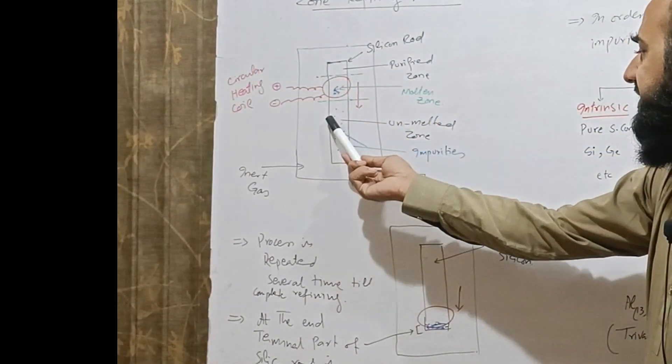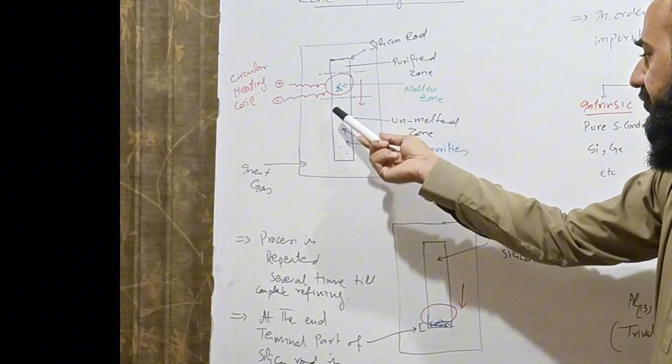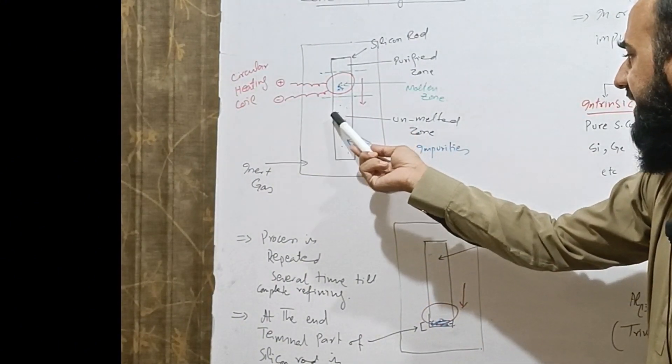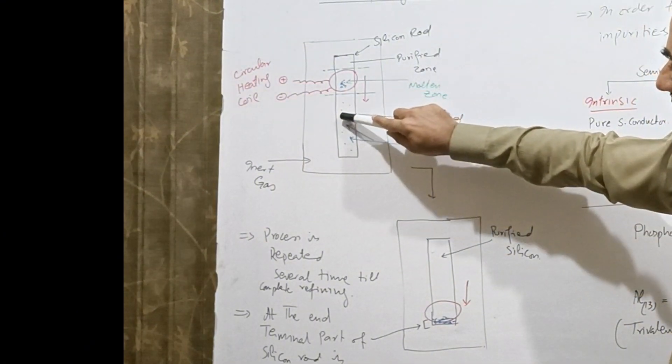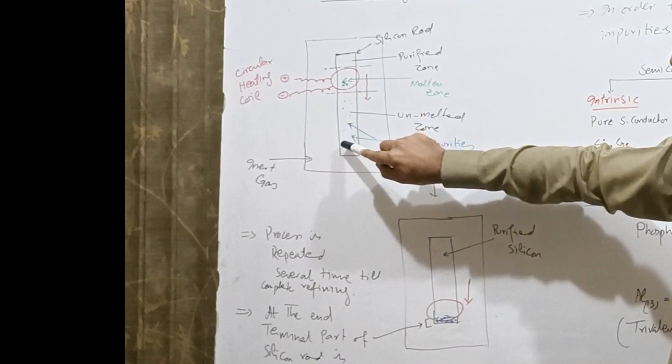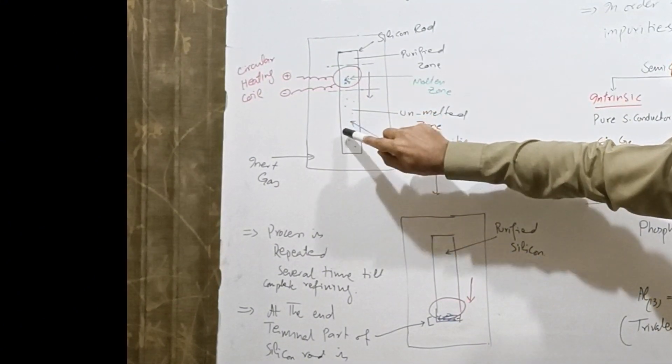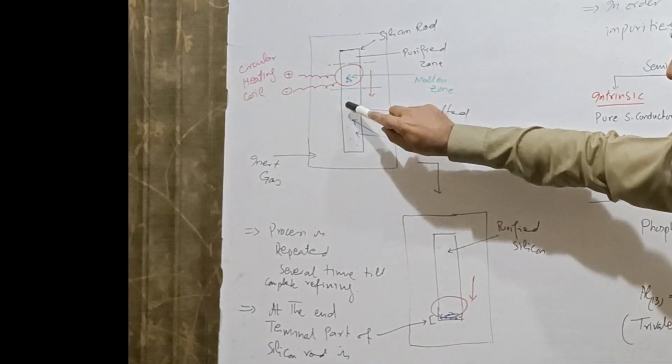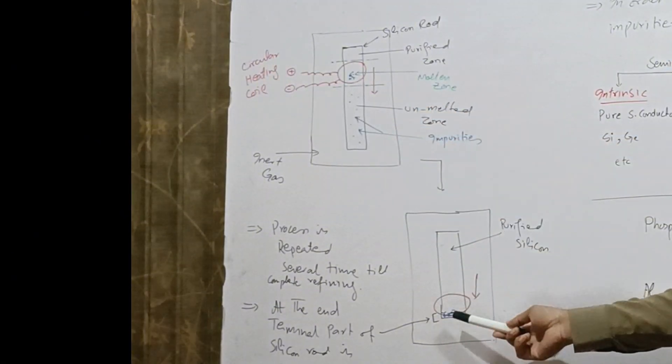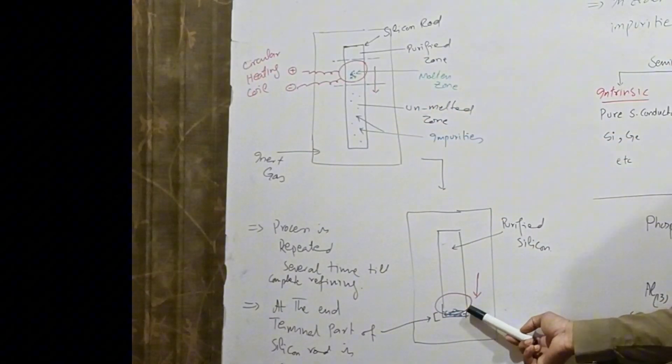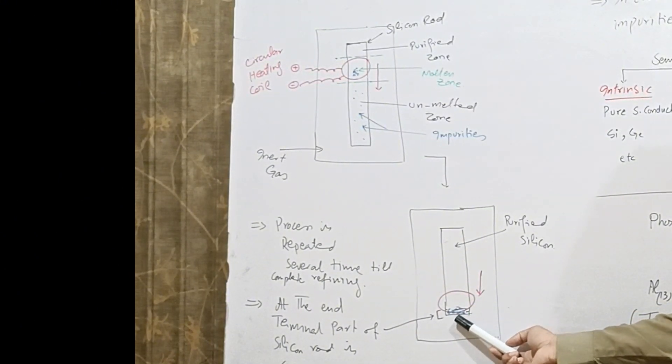If we see the impurities in this part of the silicon rod, these are separated randomly. Now when the coil reaches here, again these zones undergo melting and all the impurities aggregate and condense with each other. Ultimately when the coil reaches the bottom or last terminal of the rod, all the impurities are collected at one terminal.